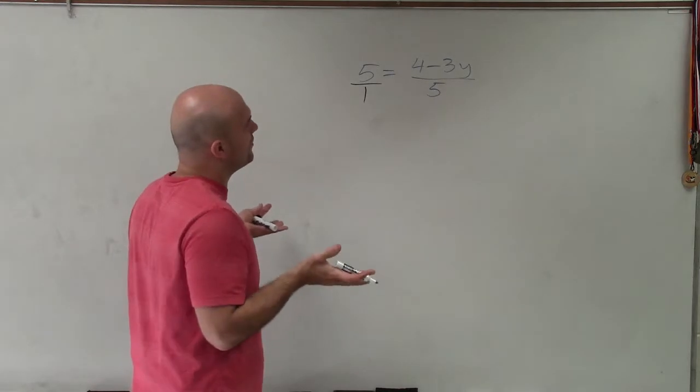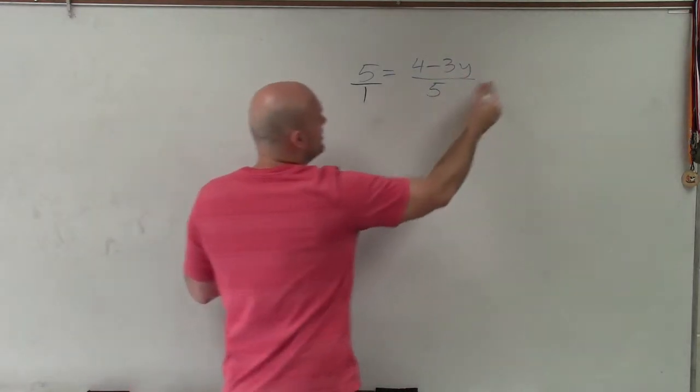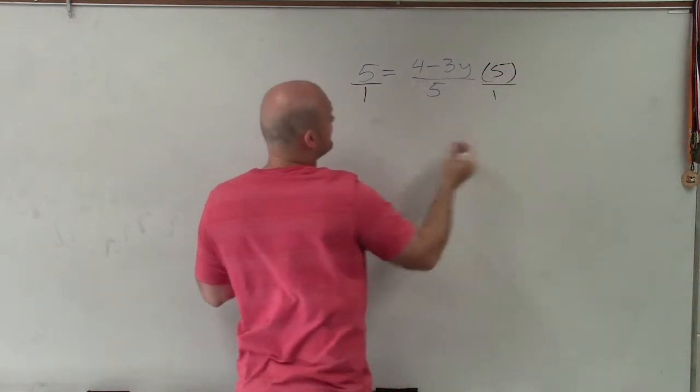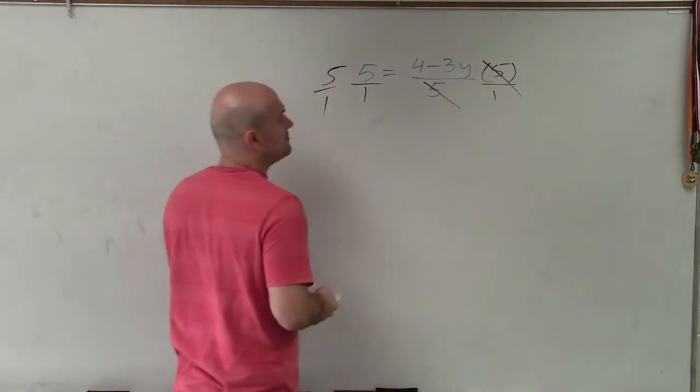And so I always think of just rather than using the cross product, which is not really going to be much because you're multiplying by 1, but if you just multiply by 5, that's going to get this off the denominator because 5 divided by 5 is just 1.